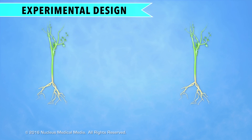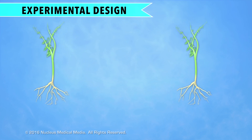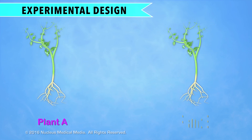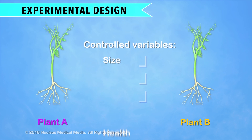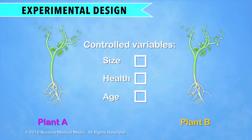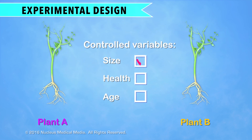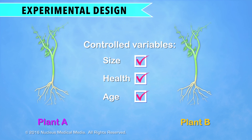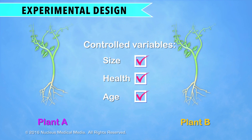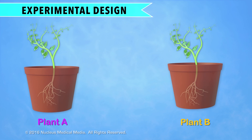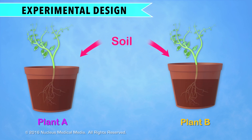First, you would get two plants of the same species. Let's call them plant A and plant B. Everything about the plants should be exactly the same, including their size, health, and age. Next, you would put each plant in identical pots with the same amount of the same kind of dirt or soil.